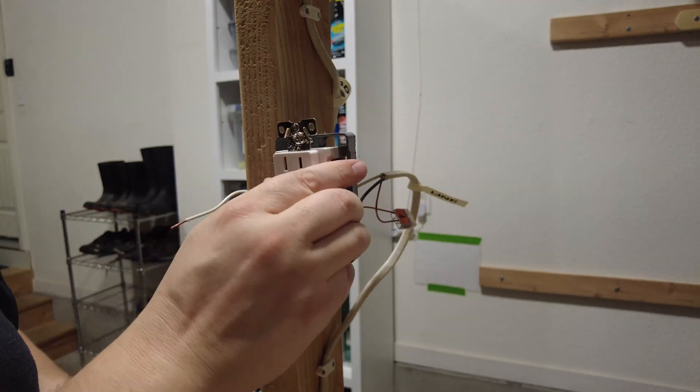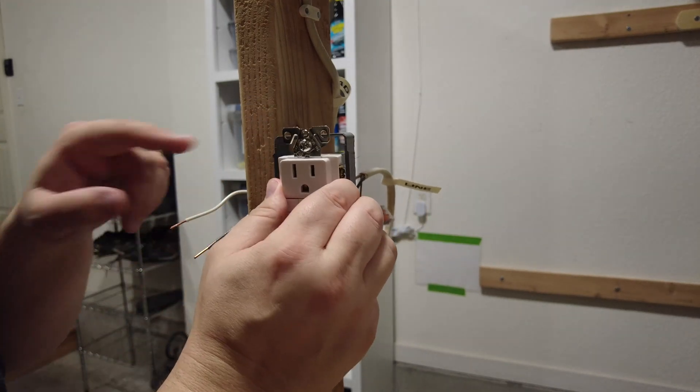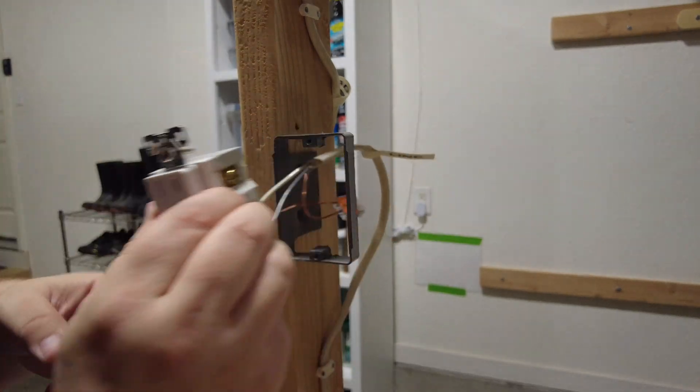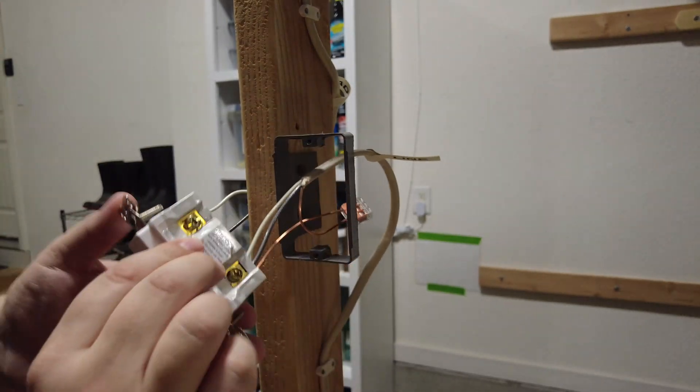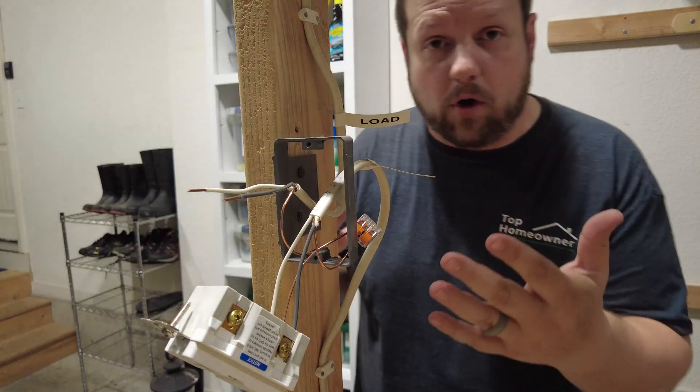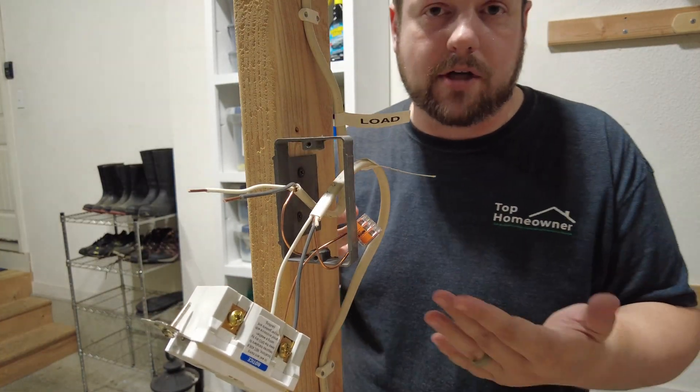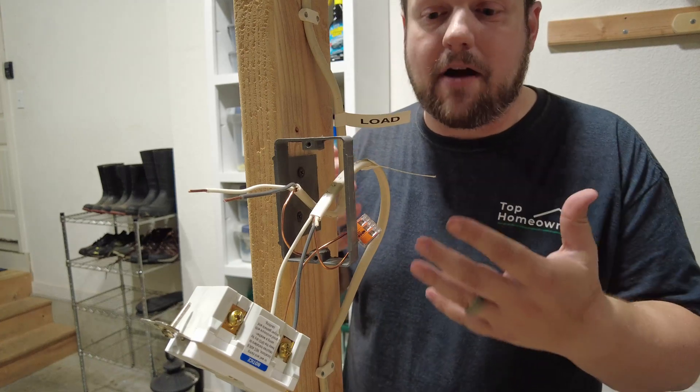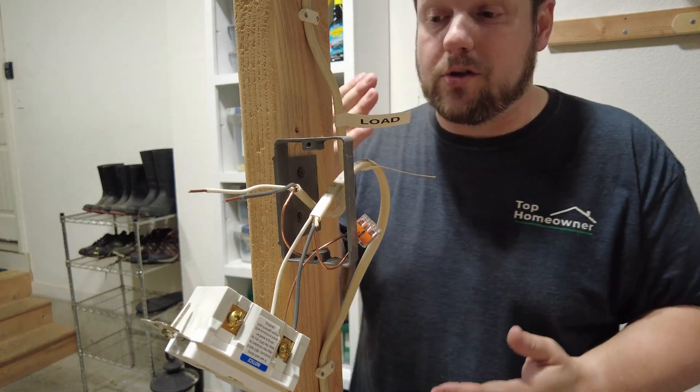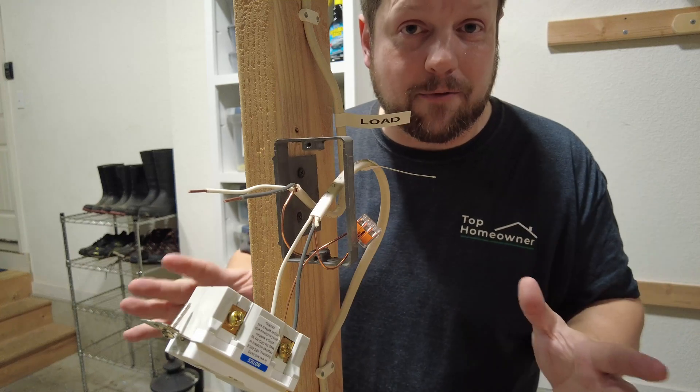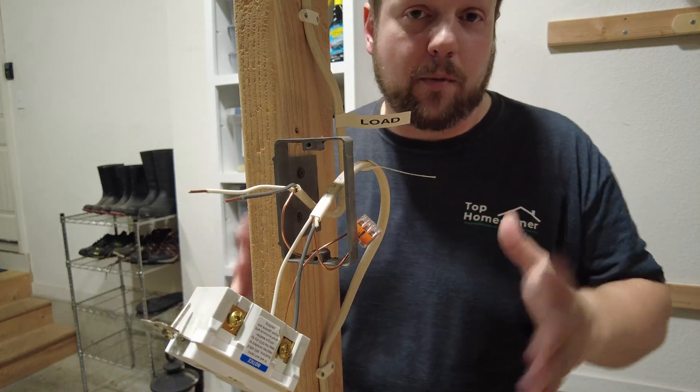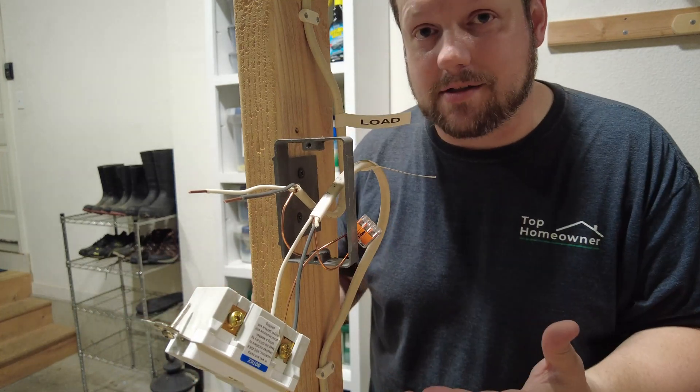So if this is your scenario, you just have one single GFCI that's not in the middle of a run, it's at the end of a run, you just have one set of wires coming into it. This is what that looks like. Now let's look at a more common scenario where you have not only line wires coming in, but you also have load wires coming out. Now, if you're not sure how to identify which is the line wire and which is the load wire, I've created a completely different video that you can go check out whenever you're done with this one that will explain that process.